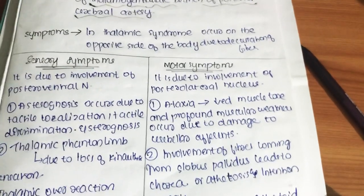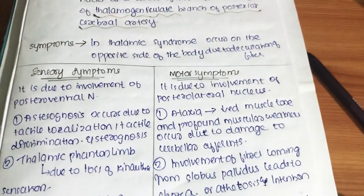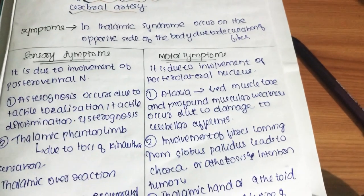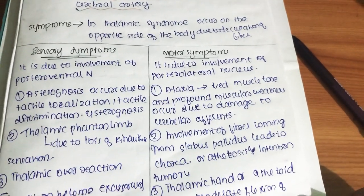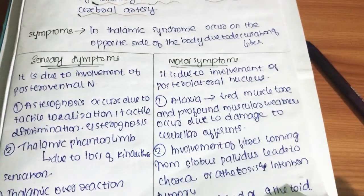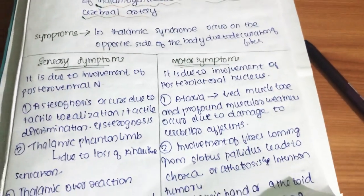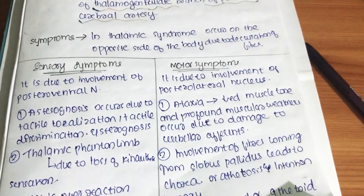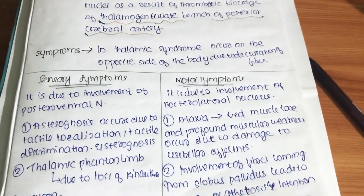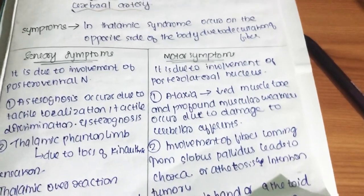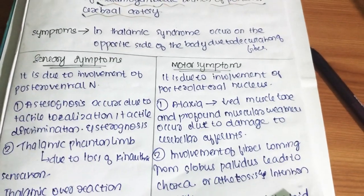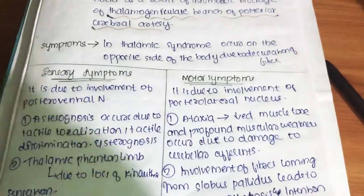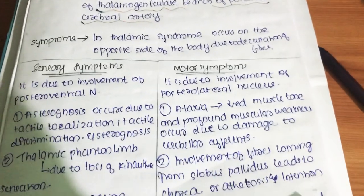The motor symptoms are due to involvement of the posterolateral nucleus. The first motor symptom is ataxia, which involves increased muscle tone and profound muscular weakness, caused by damage to the cerebellar afferent fibers.